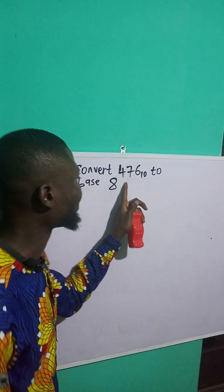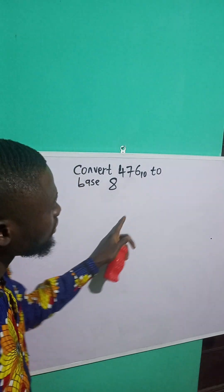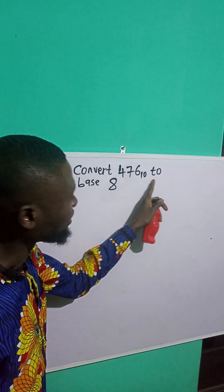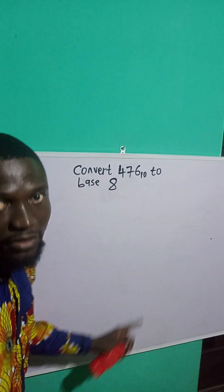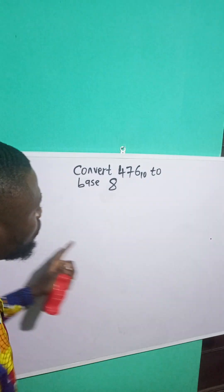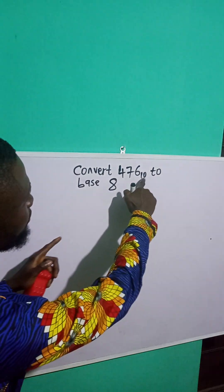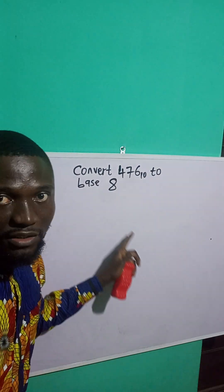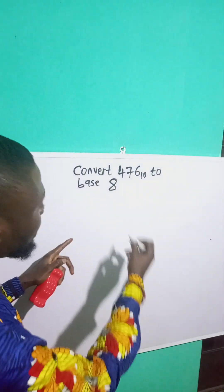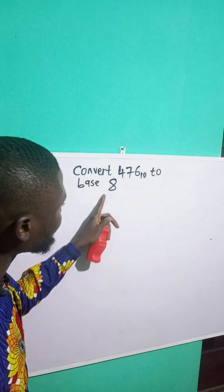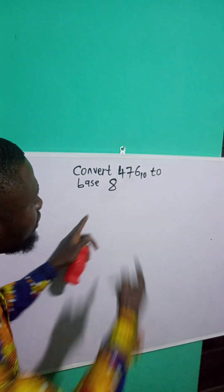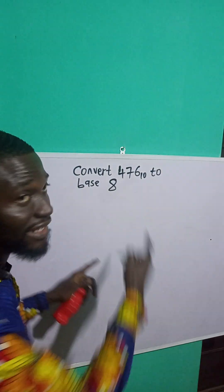I want to convert 476 from base 10 to base 8. Because I'm converting to base 8, I'll divide this number by 8.